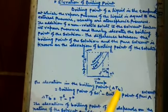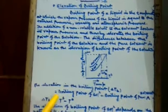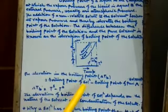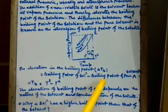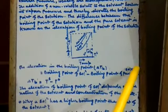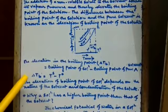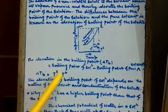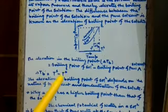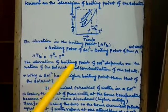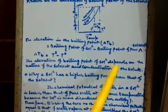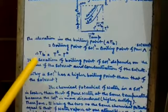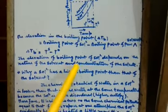The elevation in the boiling point, that is ΔTb, is equal to boiling point of solution minus boiling point of pure solvent. That is ΔTb = Ts - T0. The elevation of boiling point of solution depends on the nature of solvent and concentration of the solute.